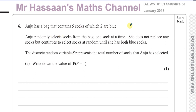The bag contains five socks, of which two are blue. Andrew randomly selects socks from the bag one at a time. She does not replace any socks but continues to select at random until she has both blue socks. The discrete random variable S represents the total number of socks she has selected. Write down the value of the probability that S equals one.